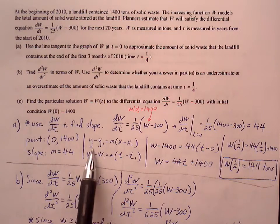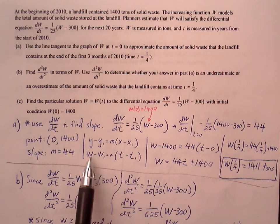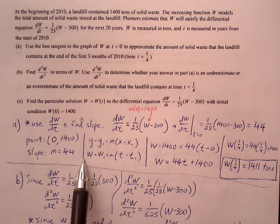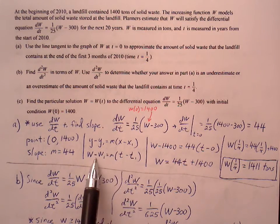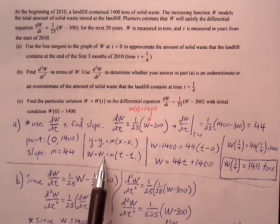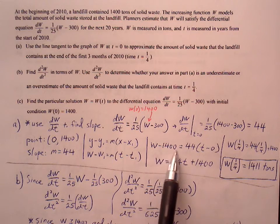There's our point. There's point slope form. Maybe to make it so that I'm using in terms of t and W, I can say W - W₁ equals m times (t - t₁). Replace t₁ and W₁ with 0 and 1400. Replace m with 44.